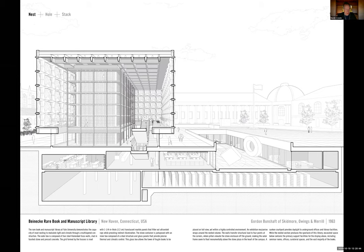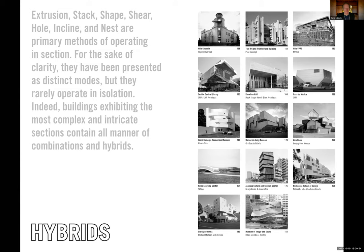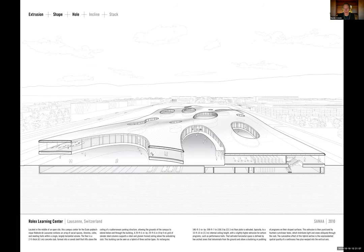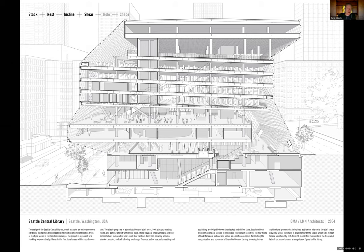Most sections of buildings are hybrids — more than one type working together in the development of a project. SANAA's Rolex Learning Center combines shaping of space, holes, incline, and stacking — five of the seven types clearly identified. The OMA Central Seattle Library has stacking, nesting of volumes within, incline, and shearing as the space moves across. In Grafton Architects, you have stacking of office volumes above, shaping of space below, all within a series of holes cut in to allow light to move through.